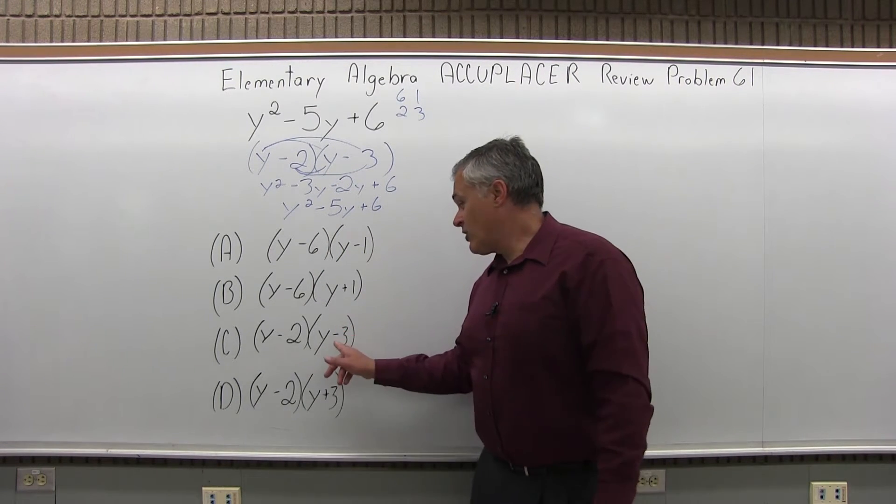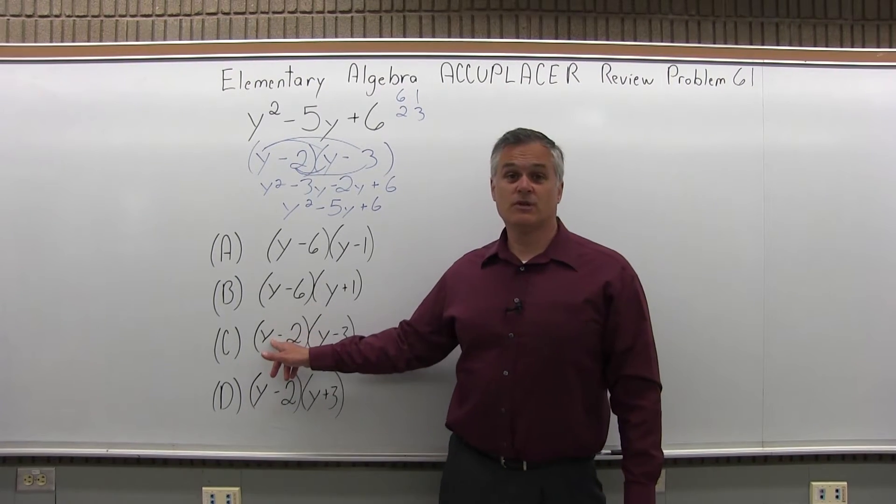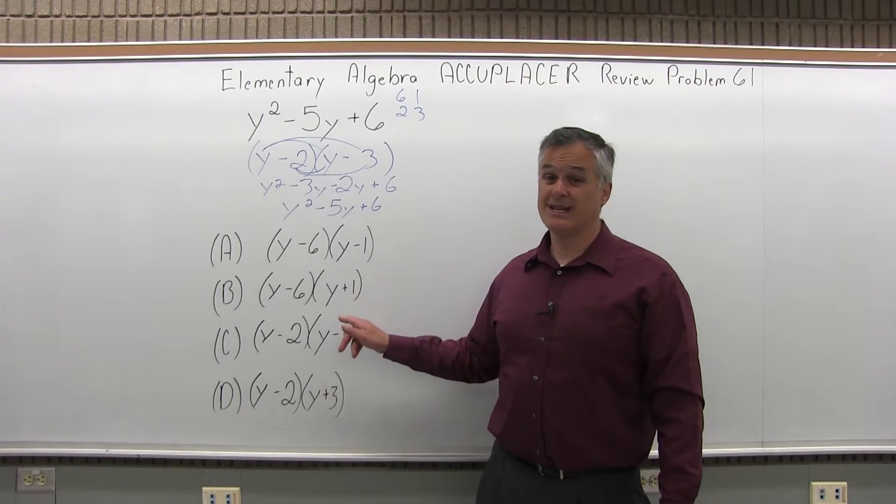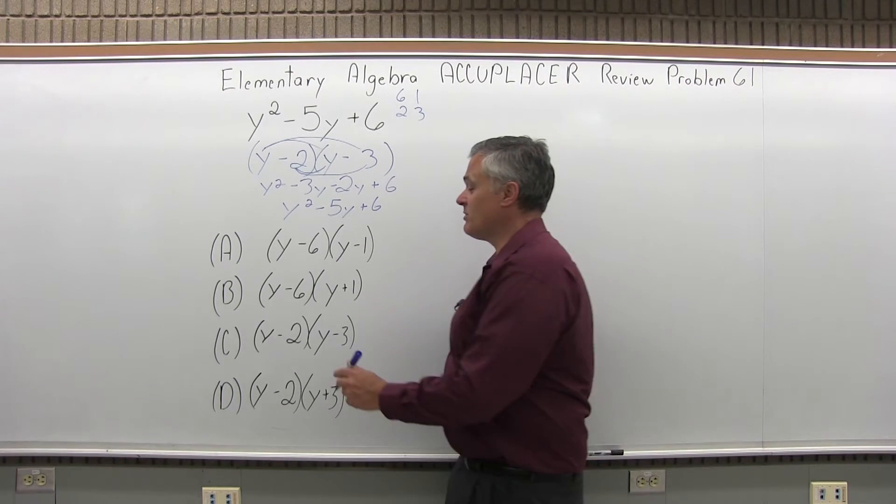Now keep in mind, I could have had the other parentheses first. I could have done y minus 3 in the first parentheses and y minus 2 in the second. It's the same thing. They're multiplied, so you could multiply in either order.